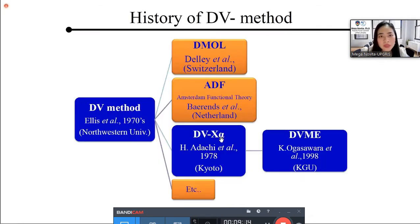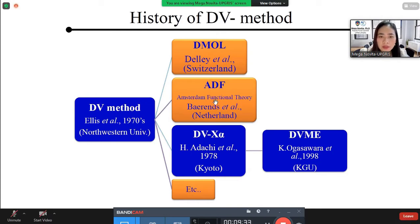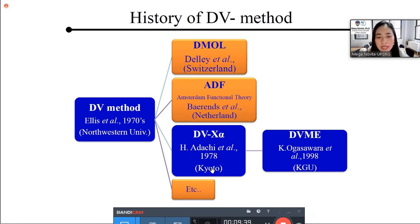Here I show you the history of DV method. DV method was first developed by Professor Ellis in 1970s in Northwestern University, and some of his students developed many approaches like Dmol, developed by Professor Delley from Switzerland, ADF by Professor Baerends from Netherlands, and our great Professor Adachi developed DVX Alpha in 1978 from Kyoto University, and finally, DVME method has been developed by Ogasawara Sensei from Kwansei Gakuin University. But actually, the development of DV method has been done by many researchers.